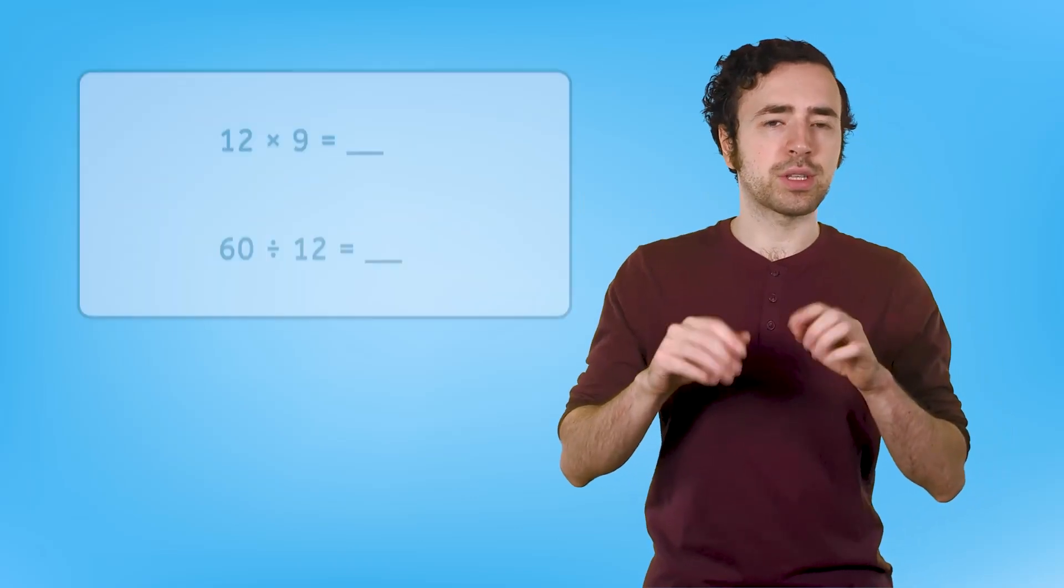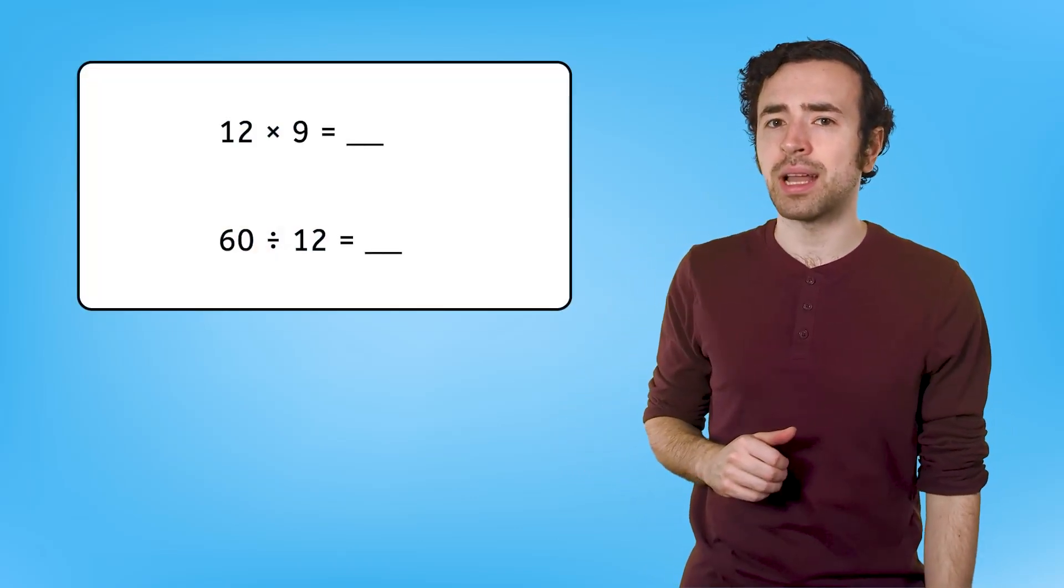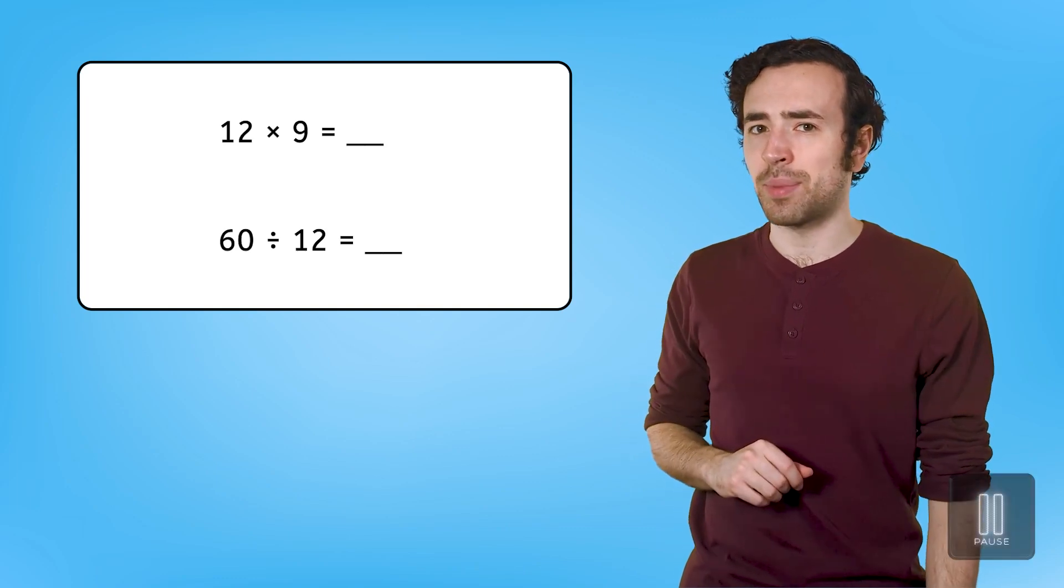Let's apply this to our 12s. Half of 12 is 6, right! And half of 6 is 3. We can use our 6s, and even our 3s, to help us with our 12s, because these numbers share that same double and half relationship. In your guided notes, try using related facts to help you solve 12 times 9 and 60 divided by 12.